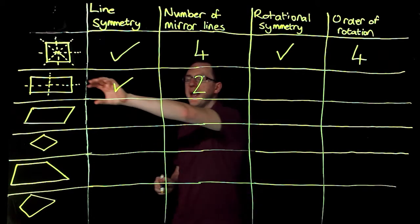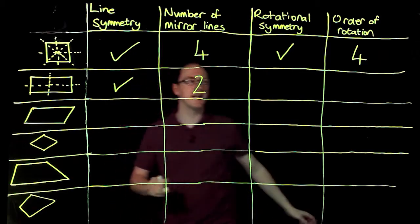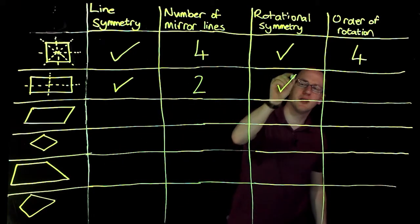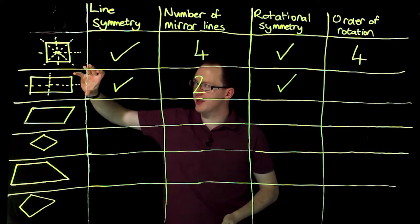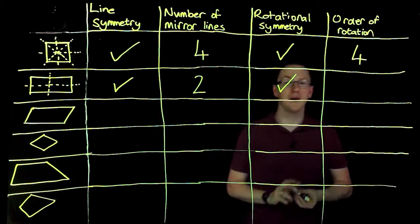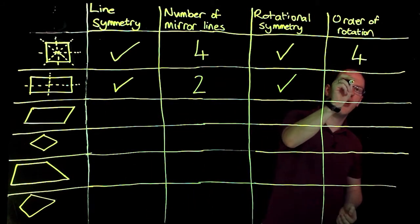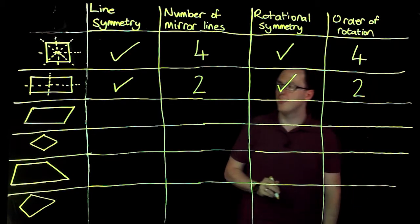And we can see if I pick it up and rotate it, it will fit inside itself. So it does have rotational symmetry. It has rotational symmetry once, halfway round, and once when it's rotated 360 degrees. So it's got rotational symmetry of order two.